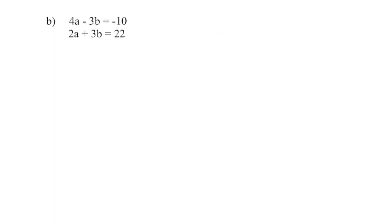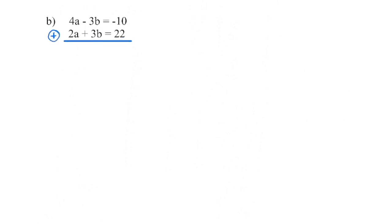Step 1: make sure that we have the terms aligned vertically — the a's are stacked on top of each other, the b's are stacked on top of each other, the constant terms are stacked on top of each other. Now we're going to take a look at the coefficients on the variables and see which variable we can easily eliminate. I can see that I have a negative 3 and a positive 3, so if I add those two equations together, that will bring my b's to 0 and eliminate the variable b.